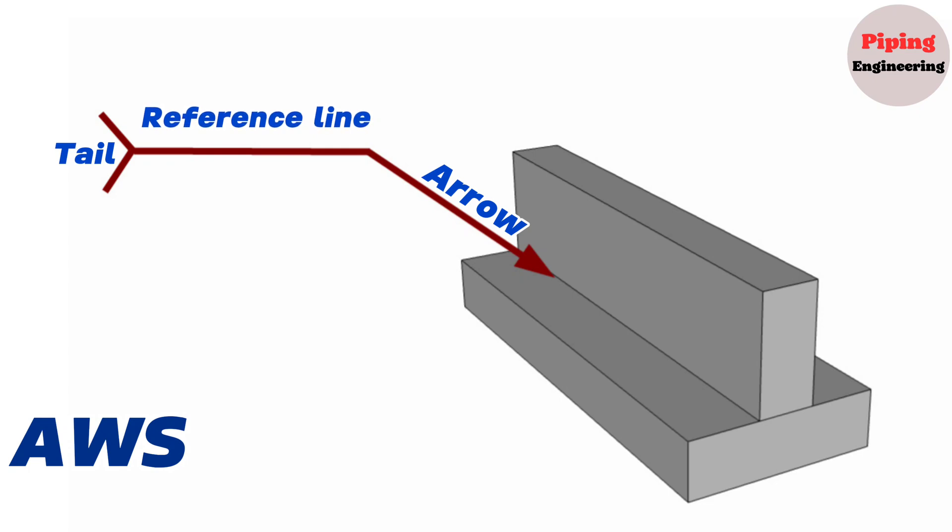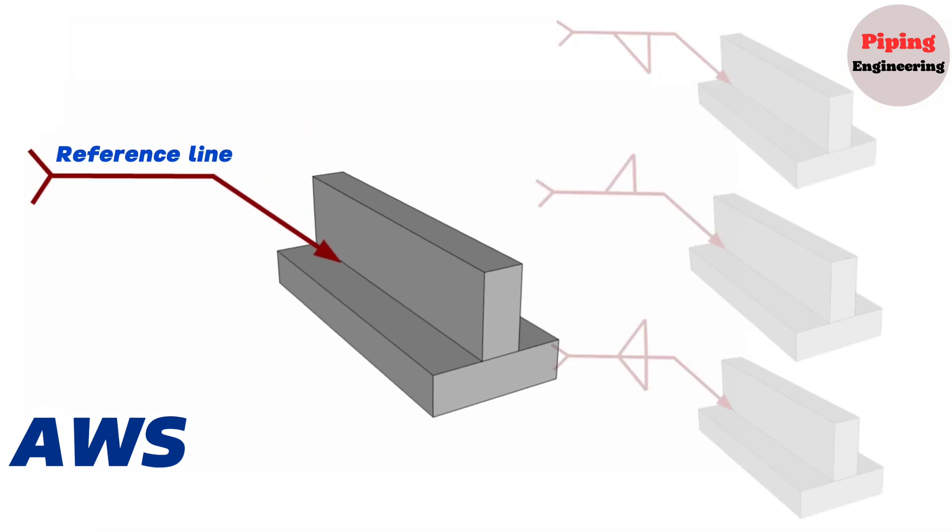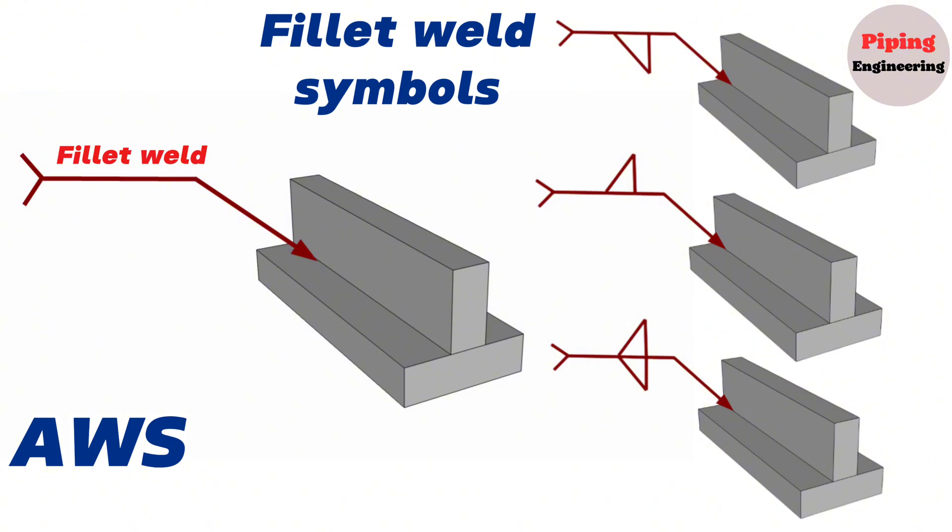So, let's briefly explain each one of the basic weld symbols. Fillet welds. Fillet welds are one of the most common weld types in the industry. Fillet welds are defined in the American Welding Society AWS.